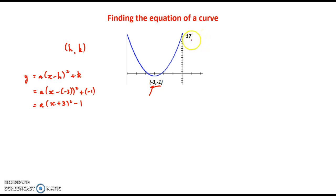That is where the second point on our graph is vital. We have been given in this instance the y intercept. We know that the y intercept is going to be when x is 0 and y is 17.